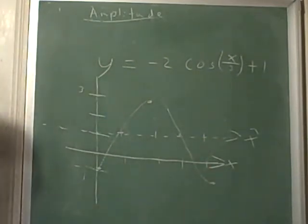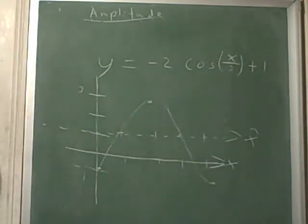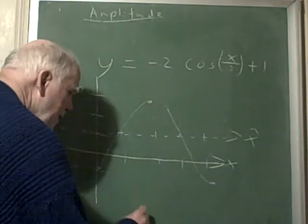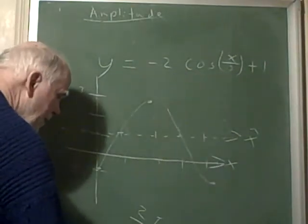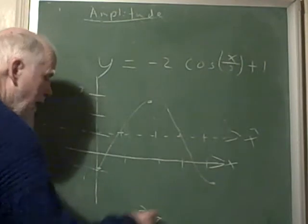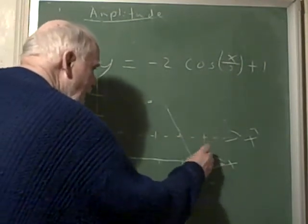Now how far is this? Well, this is old period which is 2 pi, divided by a, which is 1/3, and that equals 6 pi, doesn't it? So this is 6 pi right here.